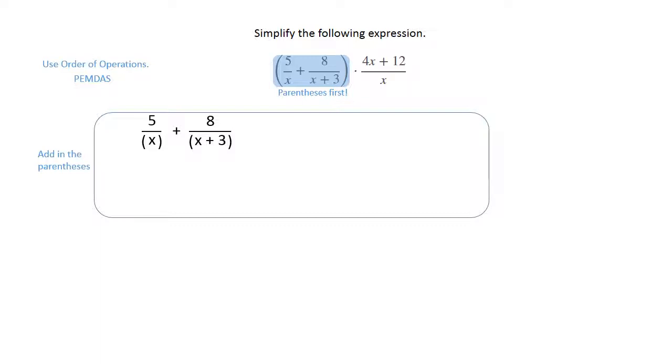In order to have them alike, we're going to put the x plus 3 on the left term and the x on the right hand term. Some of you might think of this as cross multiplying; just don't forget to hold on to the denominator.